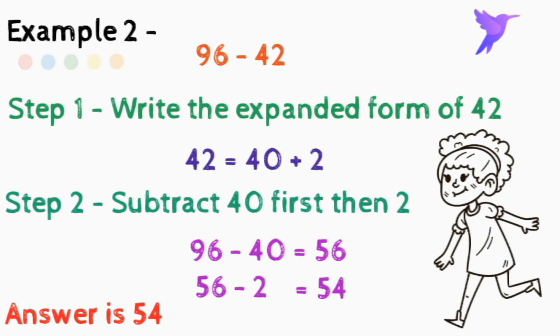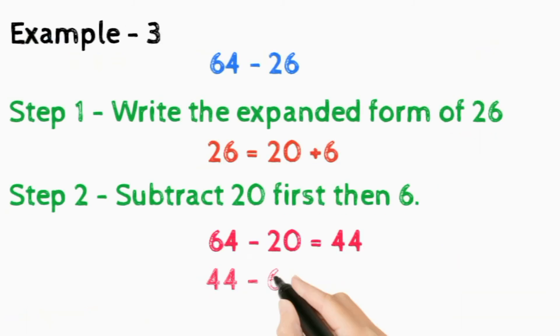So your answer is 54. When we subtract 96 minus 42, then your answer is also 54. Now what we do, we have to look at another example, that is example number 3. In example number 3, there are 64 minus 26.